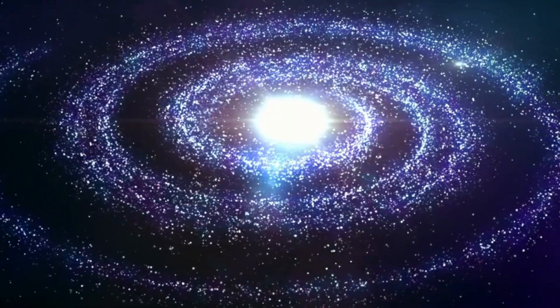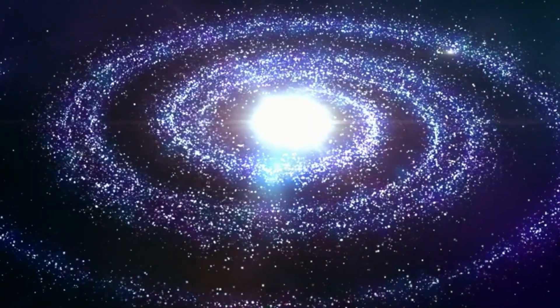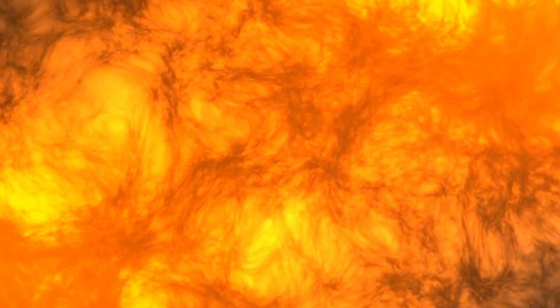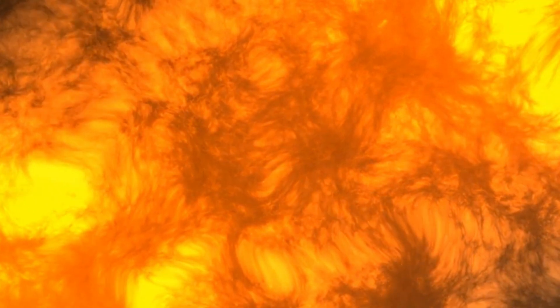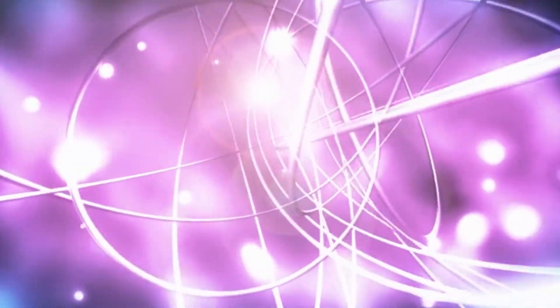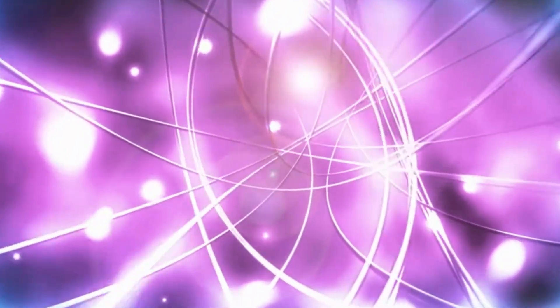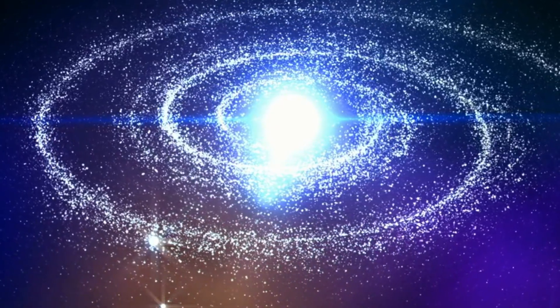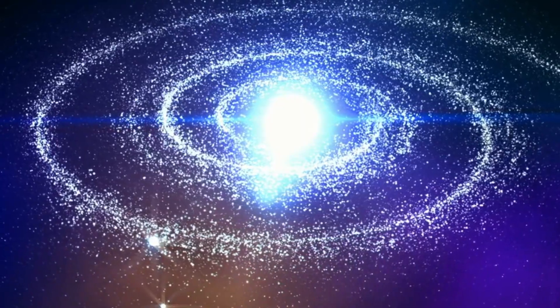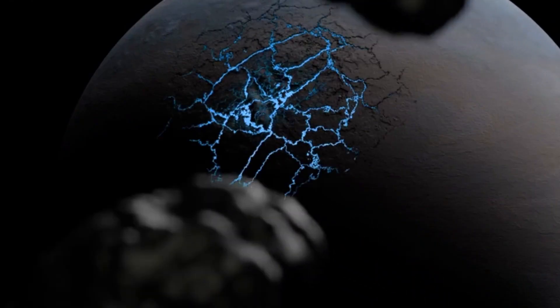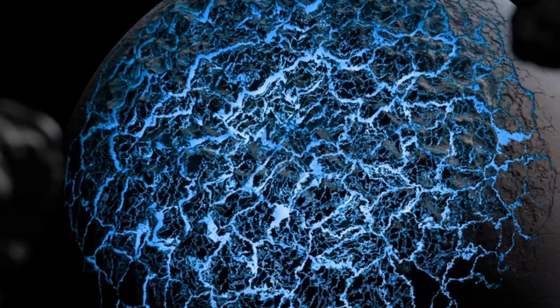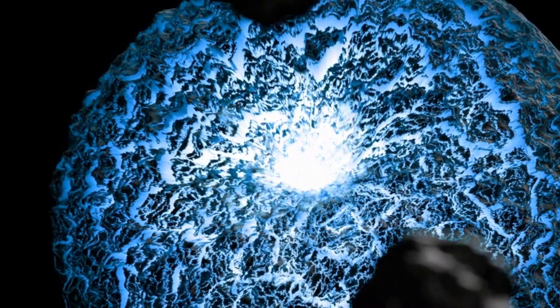But stars have an insatiable appetite for fuel. Once the hydrogen in their core runs out, stars begin fusing heavier elements like helium, carbon, and oxygen. Each fusion reaction with heavier elements, however, produces less energy. As a result, the star must burn hotter and faster to maintain its equilibrium. This process continues until the star can no longer fuse any more elements. At this critical point, the star collapses under its own gravity, triggering a spectacular implosion.